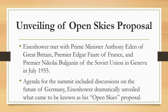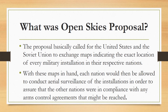The Open Skies Proposal basically called for the United States and the Soviet Union to exchange maps indicating the exact location of every military installation in their respective nations. With these maps in hand, each nation would then be allowed to conduct aerial surveillance of the installations in order to assure that the other nation was in compliance with any arms control agreements that might be reached.